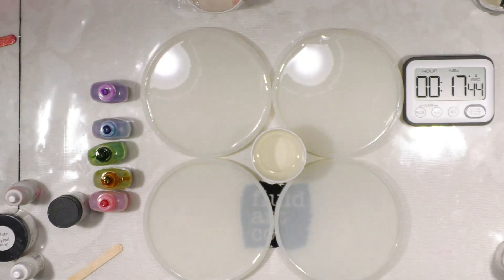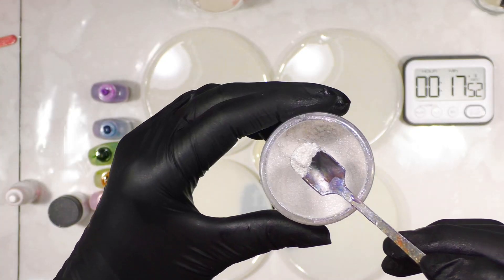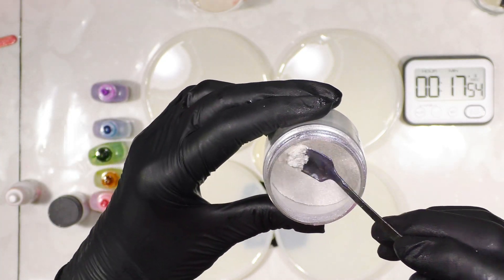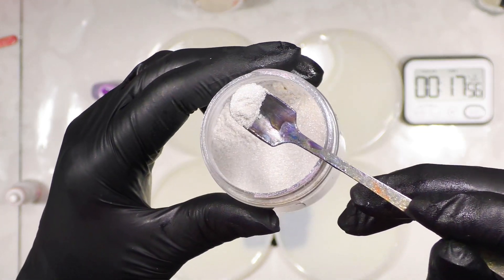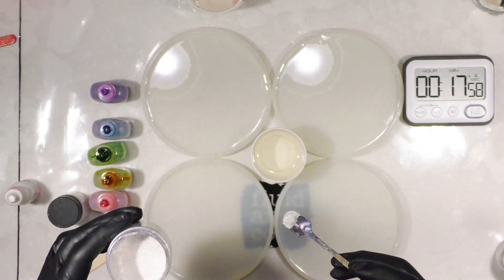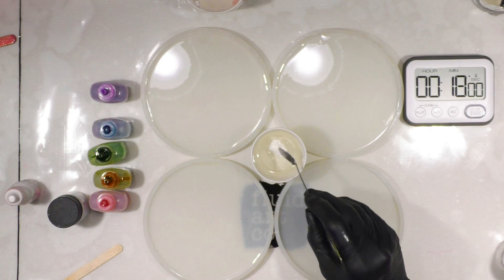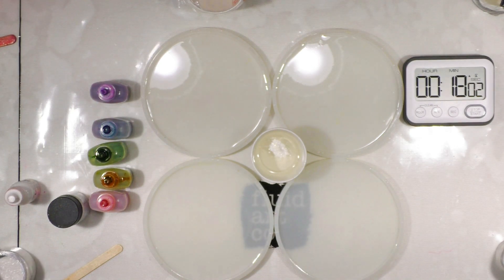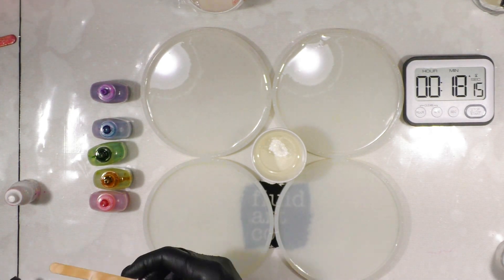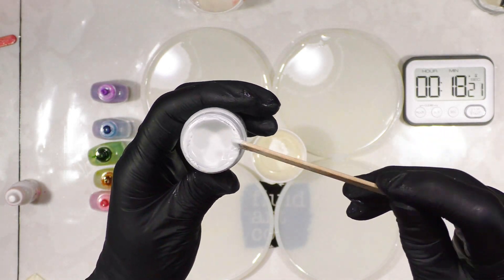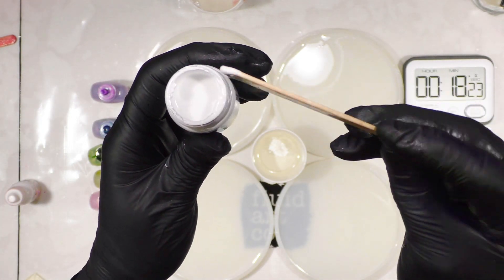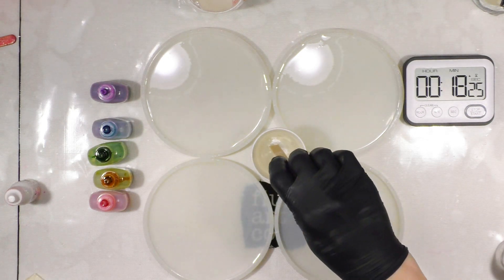Okay and here in the white we're going to do just a little bit on the end of the spoon of the white crystal. We want just a hint of shimmer. I'm going to take our stick. Put it in and wipe it mostly back off. So very little pigment.